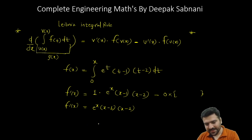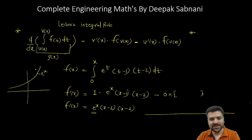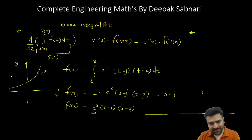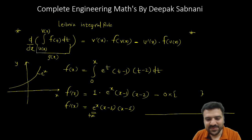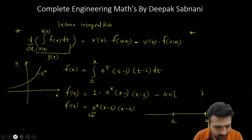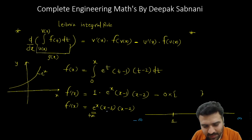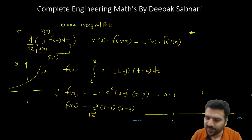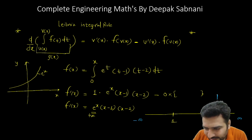Now the derivative is known. We need to find where it is positive and where it is negative, so draw a number line. e^x is always positive — all exponential functions are always positive. So f'(x) depends only on the sign of (x-1) and (x-2). The critical points are x = 1 and x = 2. When x is greater than 2, for example x = 3: (3-1) is positive, (3-2) is positive, positive times positive is positive. So f'(x) > 0, meaning f(x) is increasing on (2, ∞).